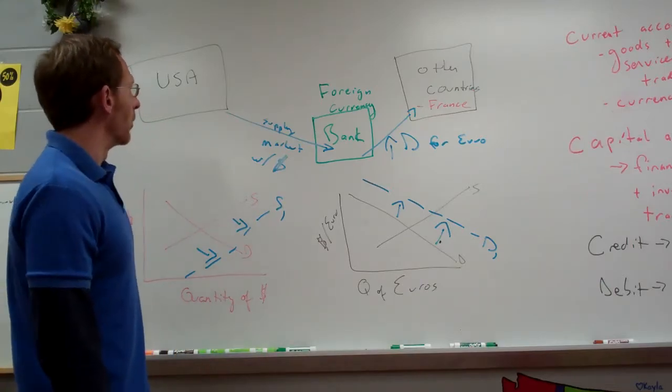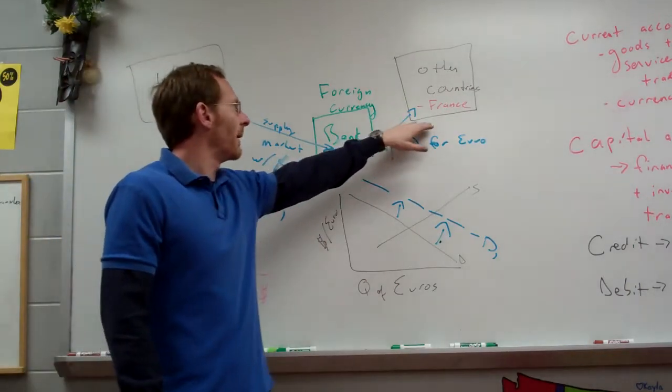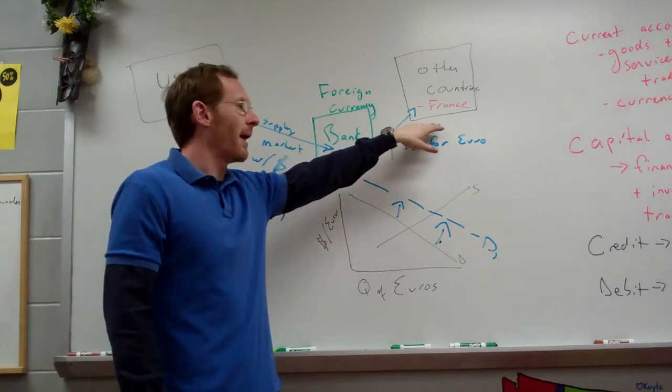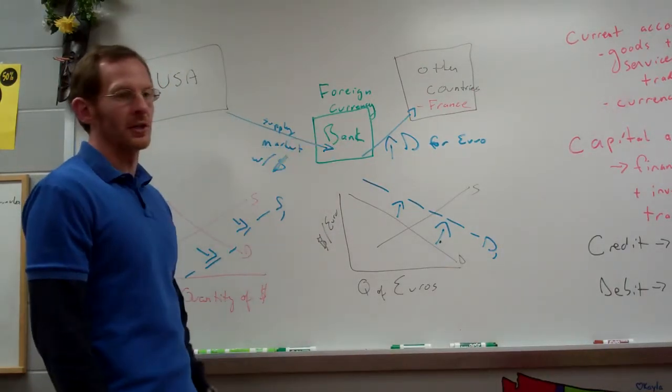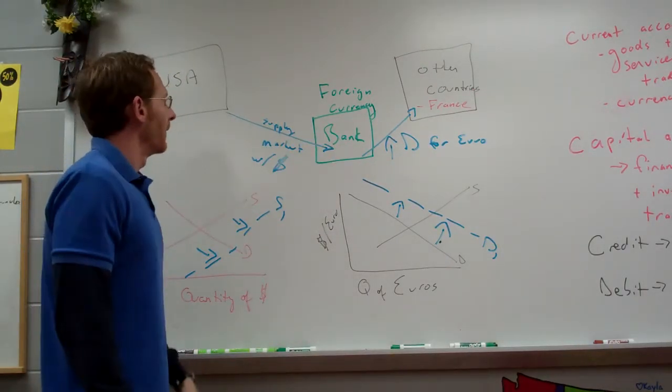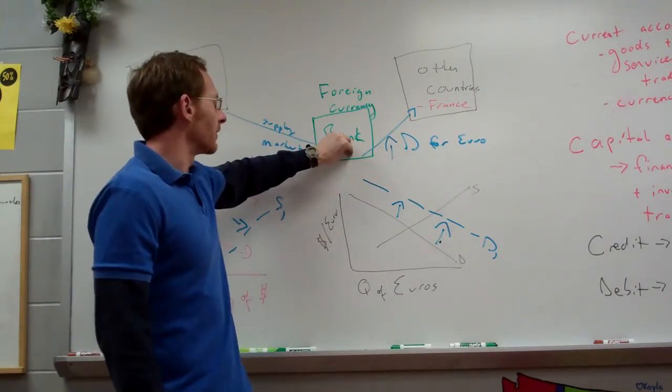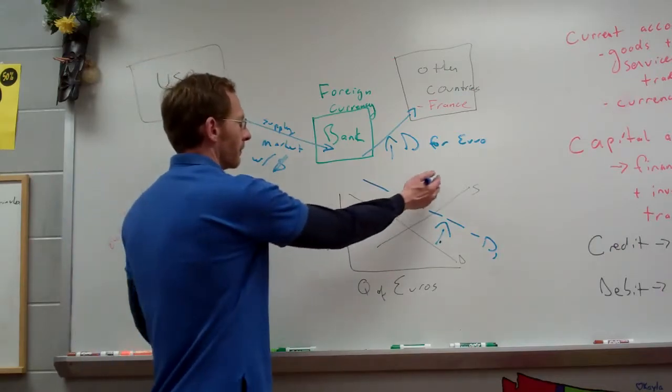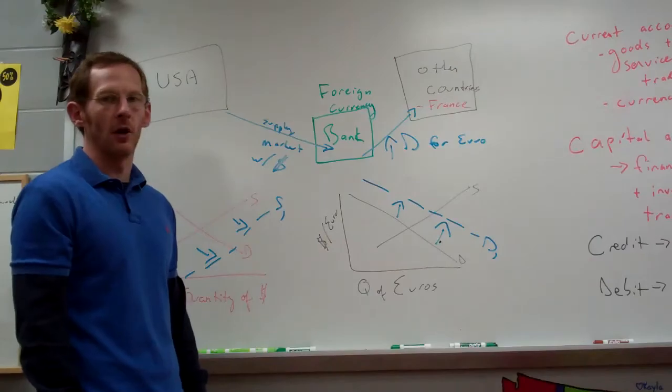So the bank has more supply of dollars, and there's been increased demand of euros. You can also say that on this international currency exchange market, there's been a decreased supply of euros here at this bank. And when you do that, the supply would go this way and would also appreciate the relative cost of the euro.